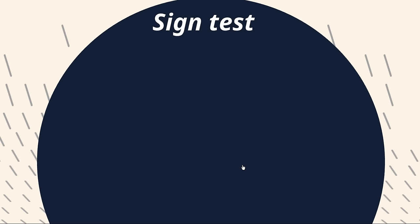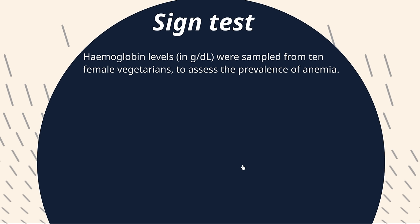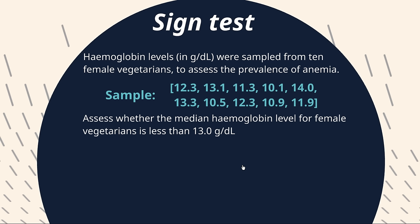So as I said, this is where you have a single sample or matched pairs. So here's the example. Hemoglobin levels in grams per deciliter were sampled from 10 female vegetarians to assess the prevalence of anemia. And here are those 10 observations in grams per deciliter. We're asked here to assess whether the median hemoglobin level for female vegetarians is less than 13.0 grams per deciliter. Now, the reason why I've written median here is that, as we said, we're not really on terms of these parameters, the mean and standard deviation and all that. So we're technically using a non-parametric measure of the central location of this population. So we can't use the mean, so we'll have to use the median here, which itself is a non-parametric measure.